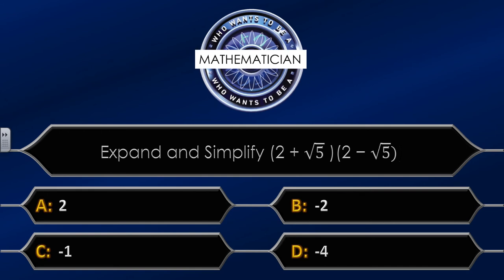Question eight: expand and simplify (2 plus root 5)(2 minus root 5). The four possible answers are: A equals 2, B equals minus 2, C equals minus 1, D equals minus 4. I'm going to give you ten seconds to see if you can answer this question.